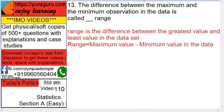The difference between the maximum and the minimum observation in the data is called as range. Range is the difference between greatest value and least value. So, max minus minimum equals to range.